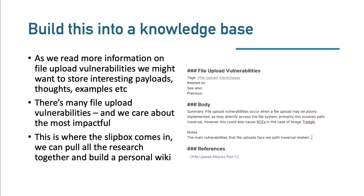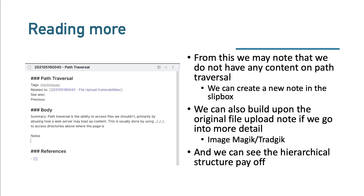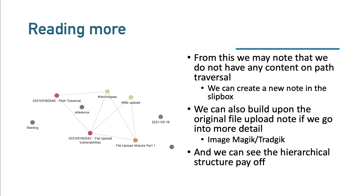You can then build this into your knowledge base. Read a few different resources and store interesting payloads, thoughts, and examples to build it up. There are many types of file upload vulnerabilities, and you care about the most impactful ones — this becomes your personal wiki. From there you might notice you don't have content on path traversal, so you create a new note. You can also make child notes, like one on ImageMagick vulnerabilities, and start to see the hierarchical structure pay off.